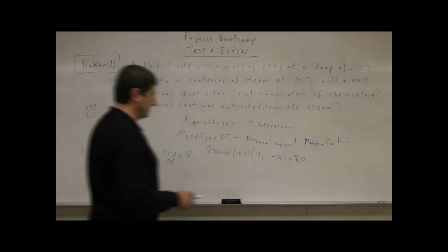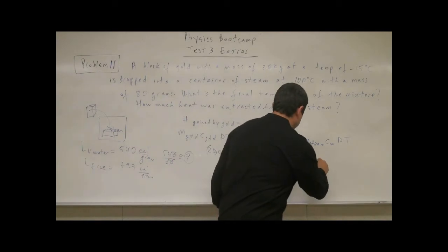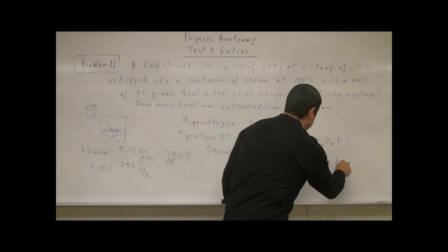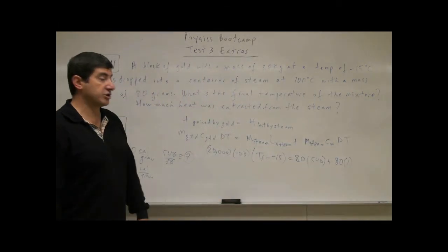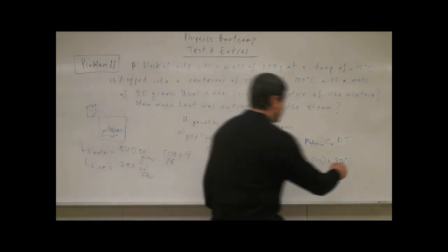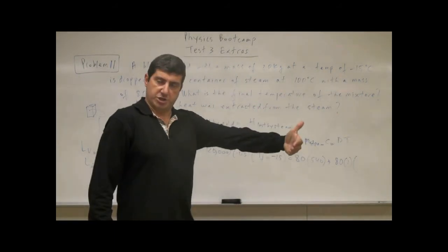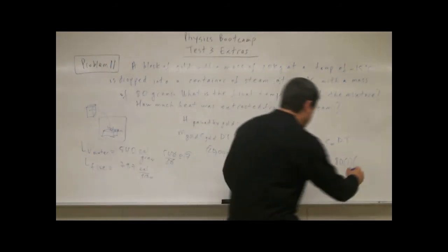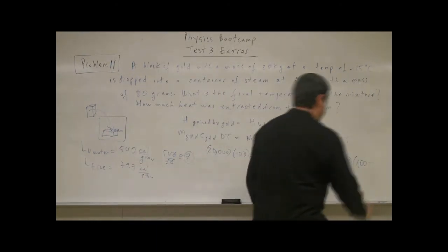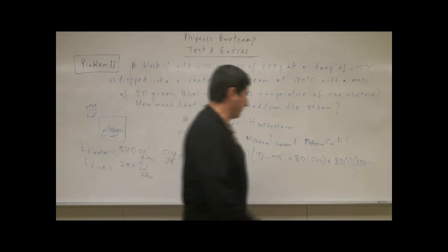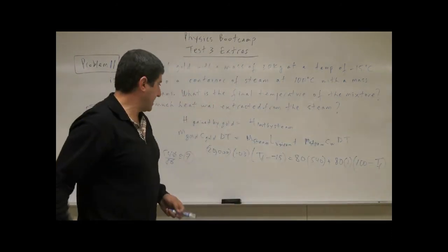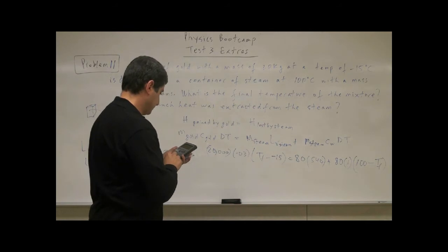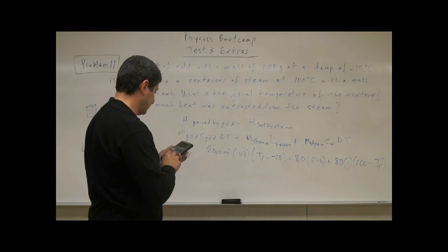That's equal to the mass of the steam, which is 80, times the heat of vaporization of water or steam, that would be 540, plus 80 times 1, which is the specific heat of water, and the change in temperature. Again, to make it positive, we do what? Its initial temperature when it turned into water was 100, so that's its initial minus the final temperature. Well, the final temperature we don't know, that's what we're solving for: Tf.